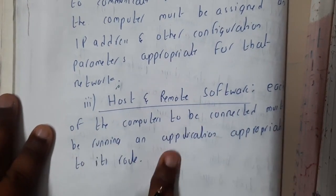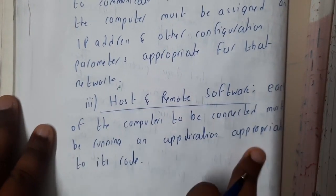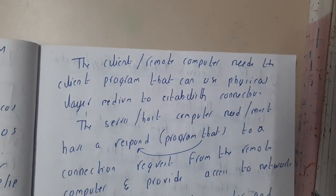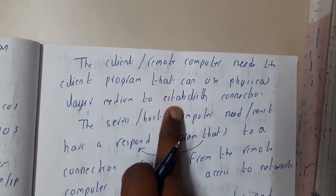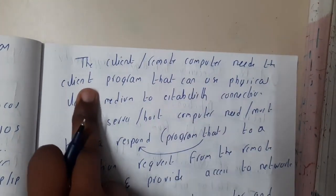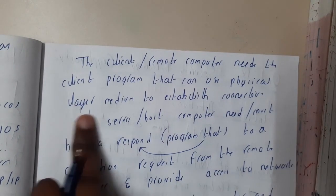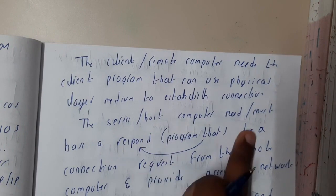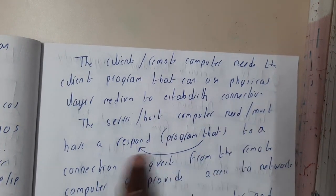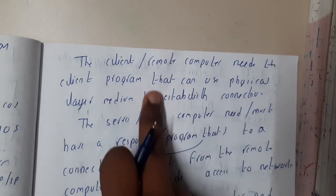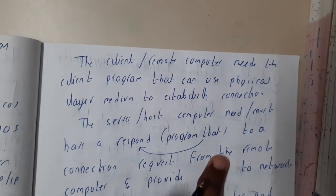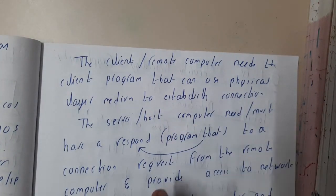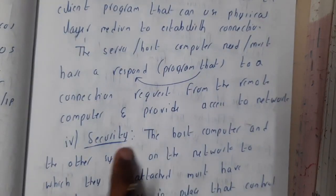Regarding host and remote software: each computer to be connected must run an application appropriate to its role. The client or remote computer needs a client program to establish the connection, while the server or host computer must have a response program. Both programs should be compatible, though port numbers can be different.